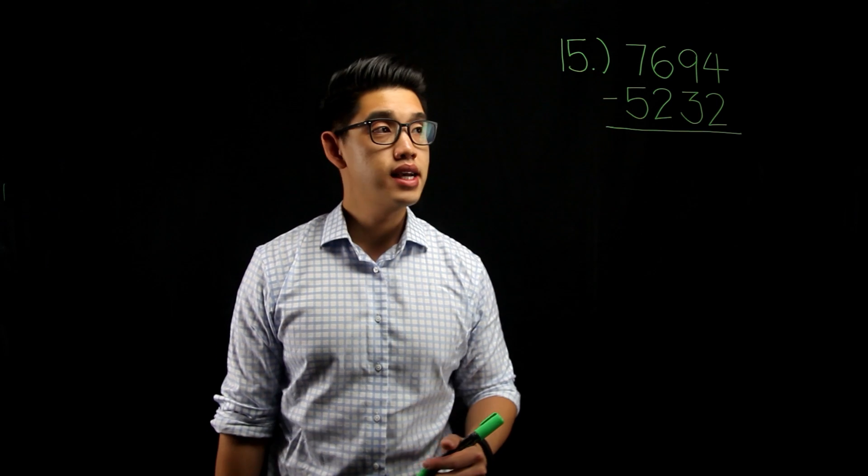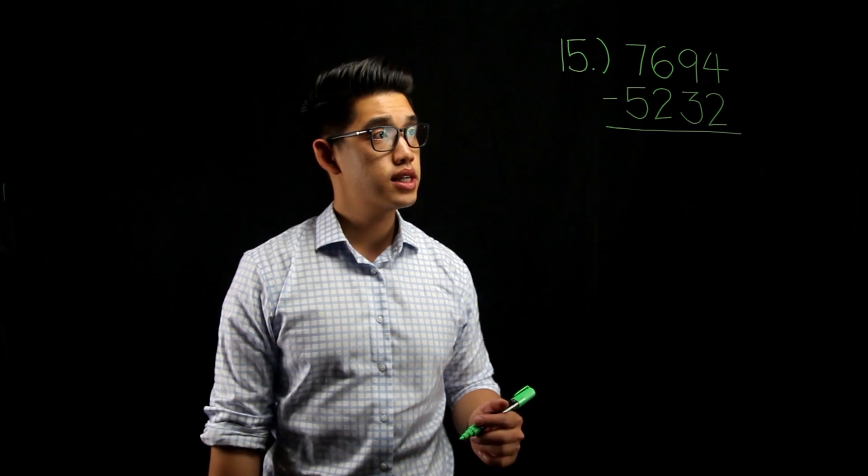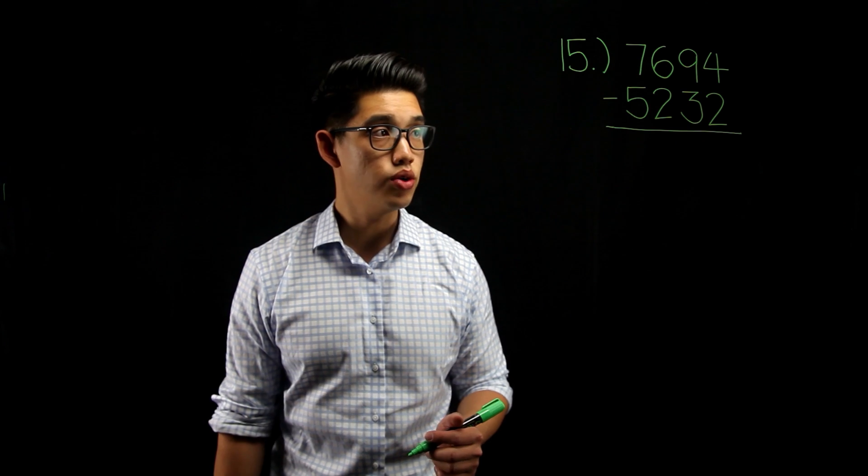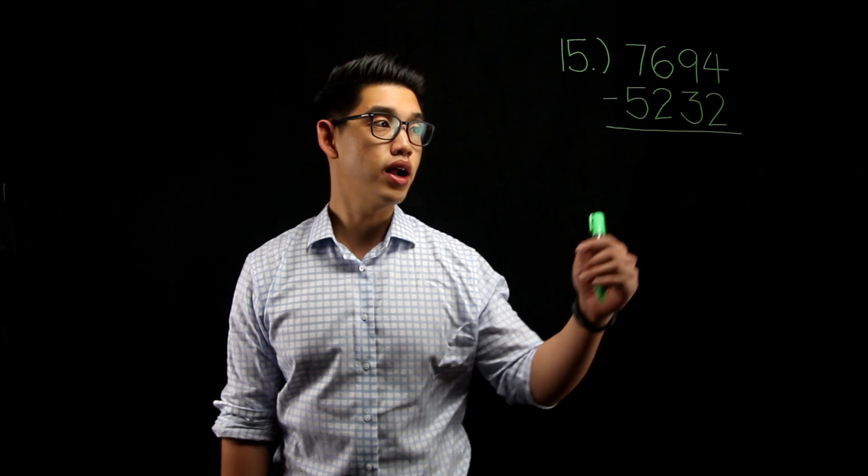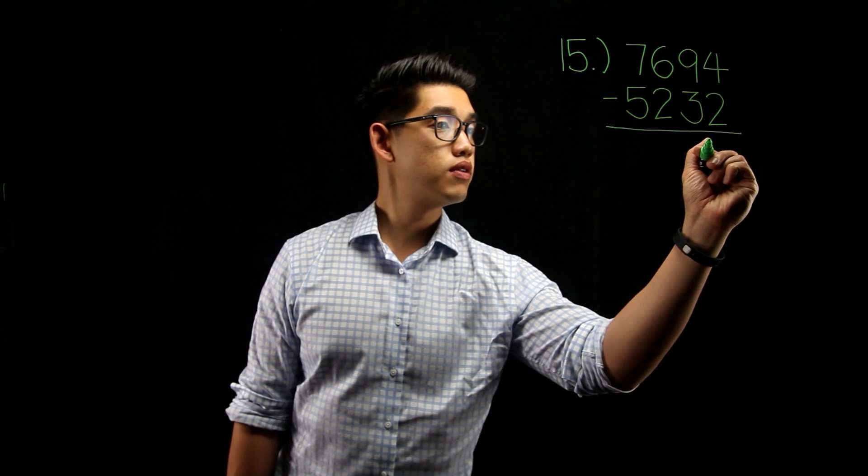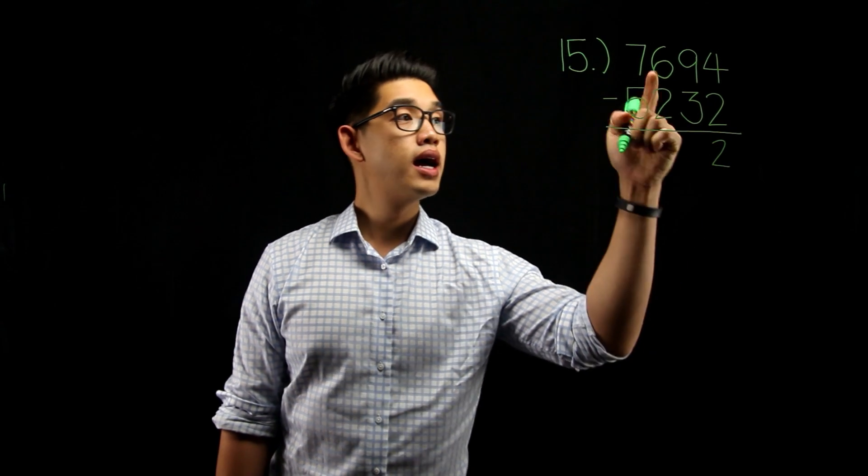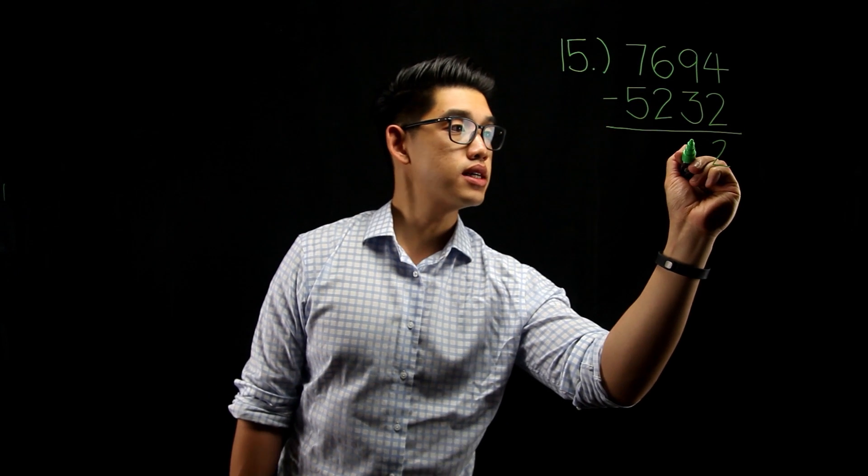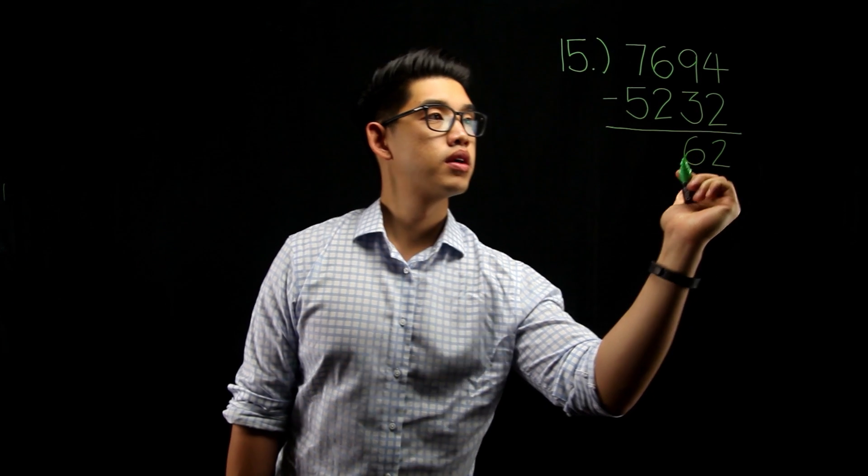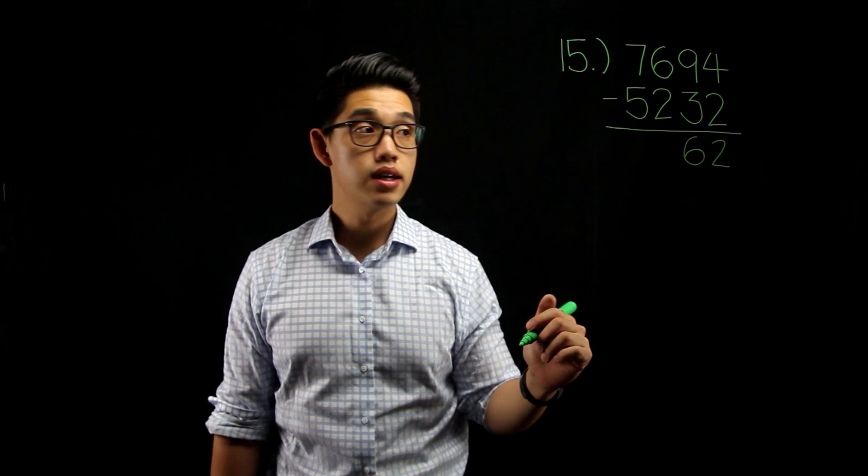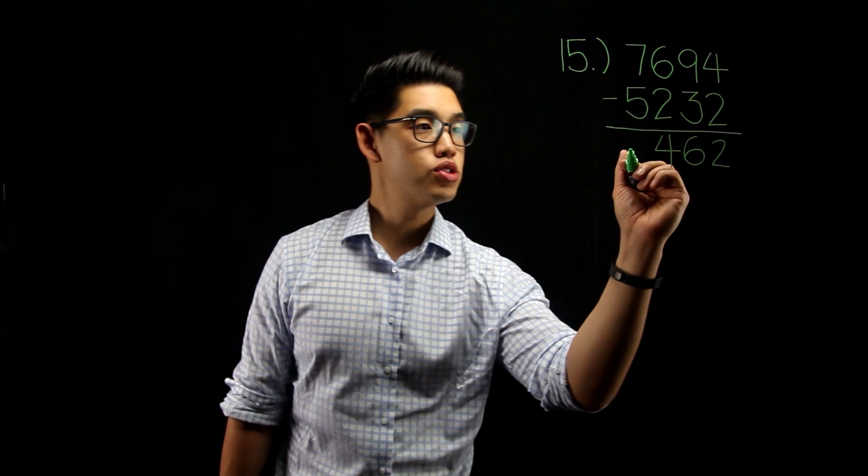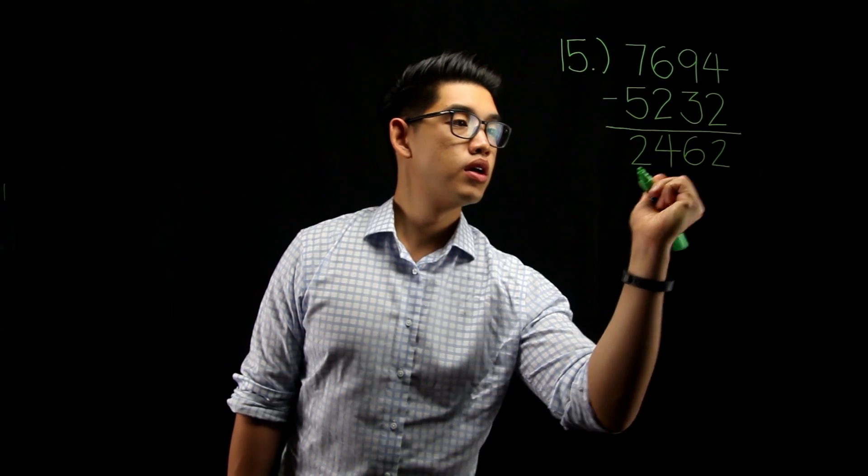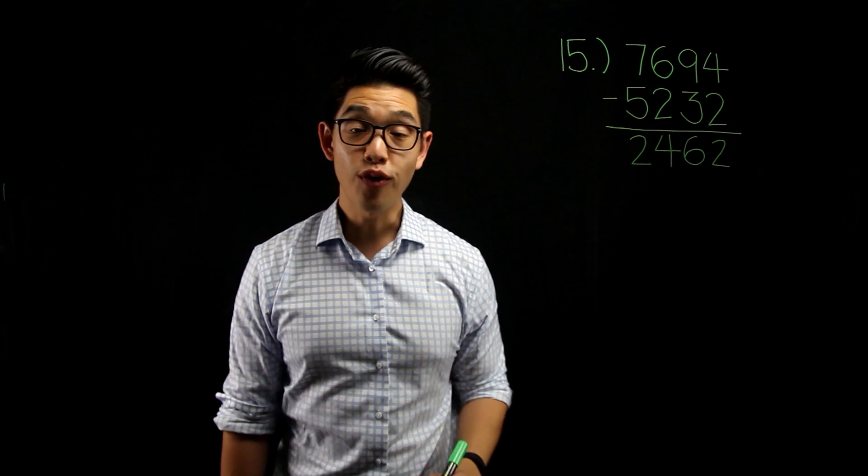Number 15 is a subtraction problem. We have 7,694 minus 5,232. Very similar to addition, we're going to subtract from top to bottom. 4 minus 2, that's going to give you 2. 9 minus 3, that's going to give you 6. 6 minus 2, that's going to give you 4. 7 minus 5, that's going to give you 2. So, your answer is going to be 2,462.